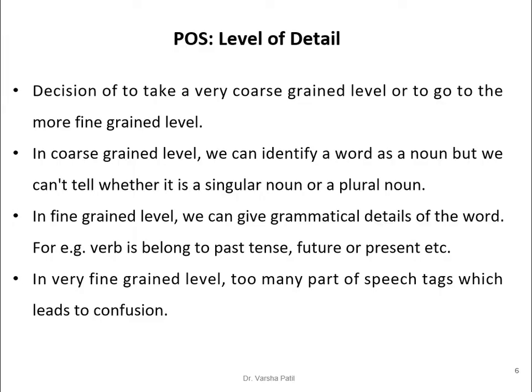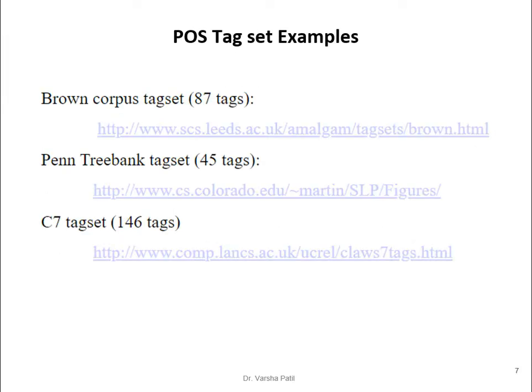At a very fine-grained level, too many parts of speech tags can lead to confusion because we need to write programs to identify the POS tag in great detail. Various types of POS tag sets are available. The well-known ones are: the Brown Corpus tag set with 87 tags, the Penn Treebank tag set with 45 tags, and the C7 tag set with 146 tags.